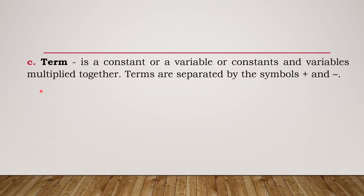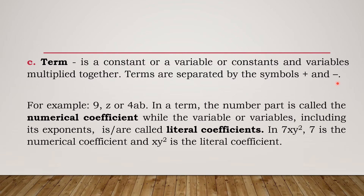Next would be the term. A term is a constant, a variable, or constants and variables multiplied together. Terms are separated by the symbols plus and minus. A term could be a constant only — for example, 9 — or a variable only, like z, or it can also be a product of a constant and variable, such as 4ab.